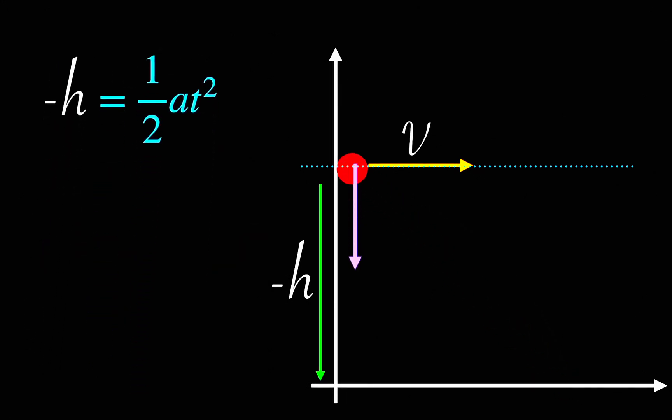The only vertical force acting is gravity. So, the vertical acceleration is minus g, where g is the acceleration due to gravity and its value is 9.8 meters per second square. If we use the value of acceleration in the equation above, we get minus h equals minus half gt square.